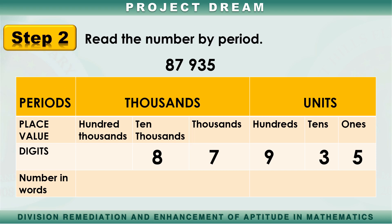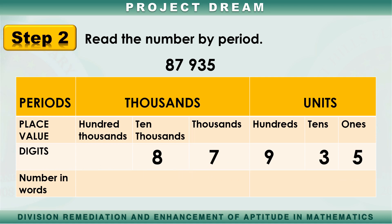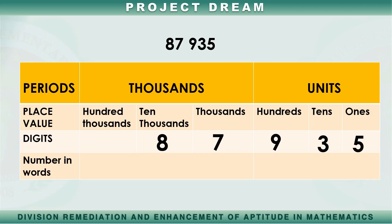Step 2: Read the number by period. We read numbers from left to right. So we're going to read from the thousands period going to the units period. Looking at the digits on our place value chart, how do we read the numerals in the thousands period?